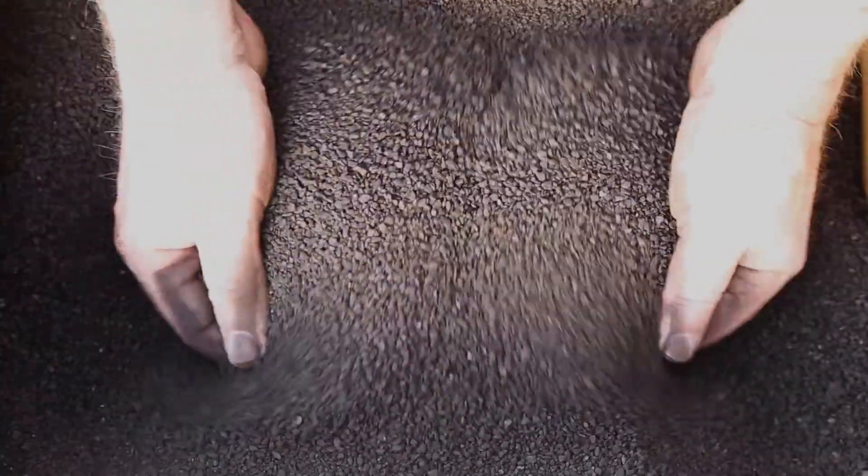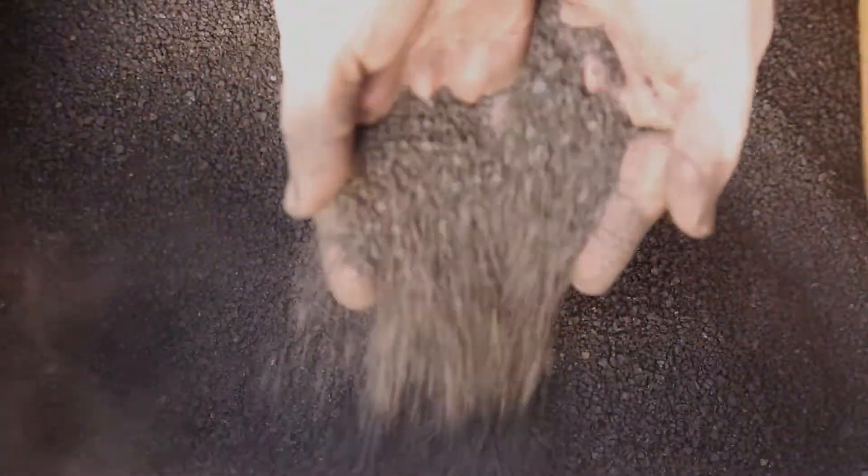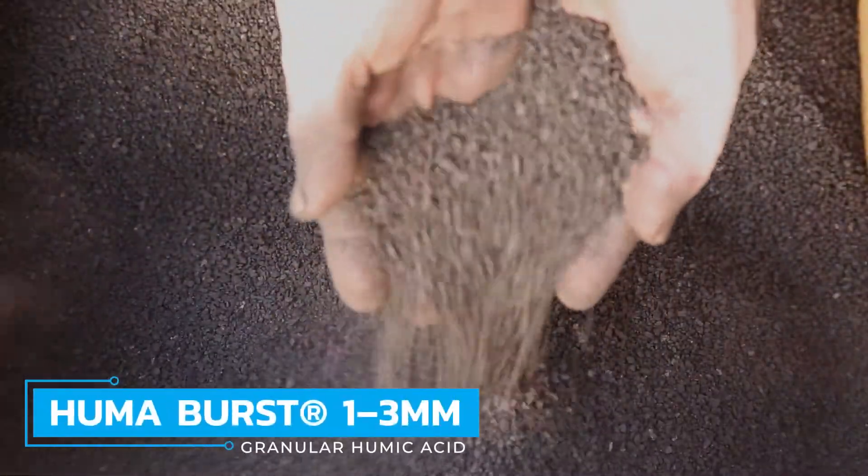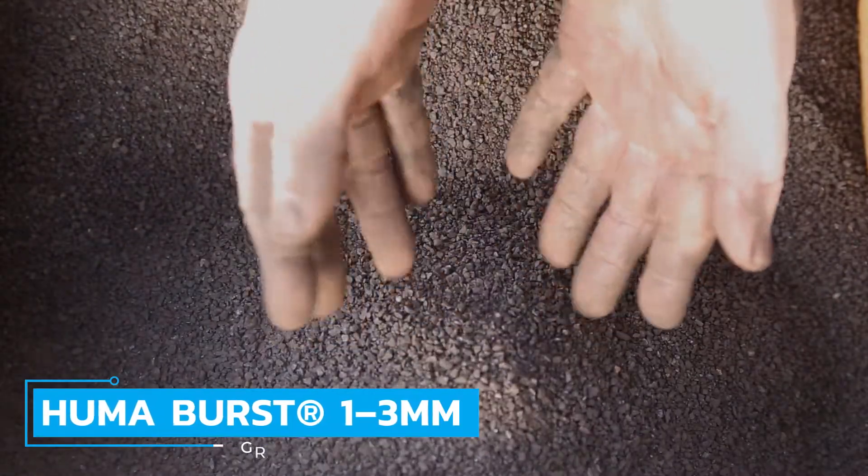Humic acids are often applied to unplanted agricultural fields as solid granules in the fall or early spring, where they slowly break down over time to improve the soil. The video shows our Humapro's 1-3mm granule as an example.